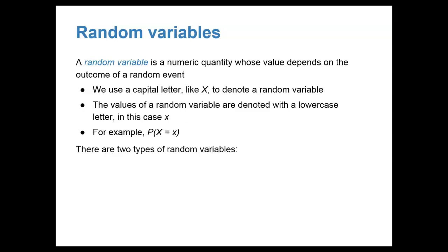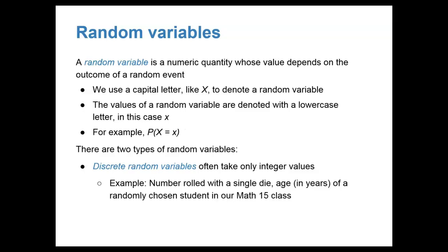There are two types of random variables that we need to take a look at. The first is called discrete random variables, which often take on only integer values, and this is what we will focus on for the rest of our discussion today. Some examples of discrete random variables might be the number rolled with a single die, or the age in years of a randomly chosen student in our Math 15 class.